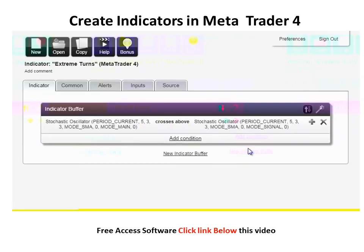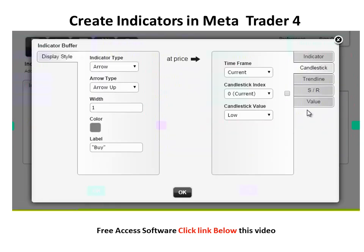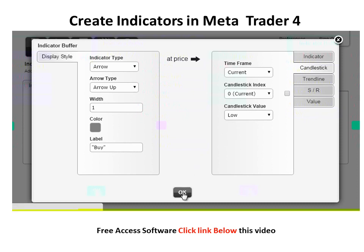Now click on this icon to customize display style. The indicator type is arrow, arrow up, the color is blue, the label is buy, and the arrow will be drawn at the candlestick low. We leave it as it is and click OK.